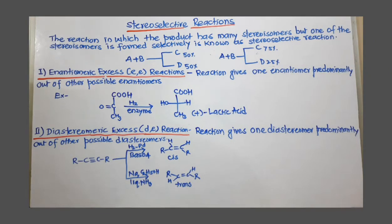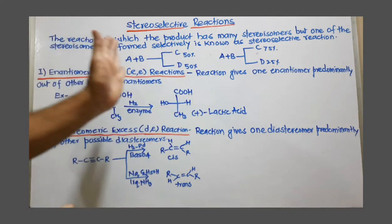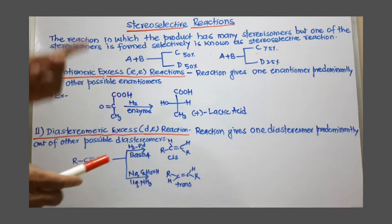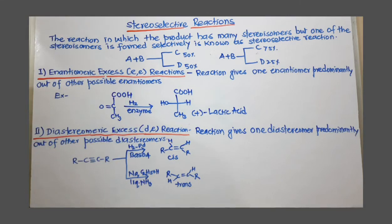Stereoselective reactions. In this video, we are going to discuss the meaning of stereoselective reactions. There are certain reactions where the product has different stereoisomers. Out of these different stereoisomers, only one is selected predominantly. That reaction is called a stereoselective reaction.